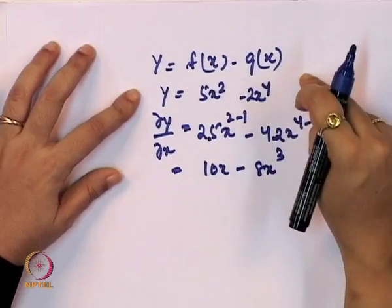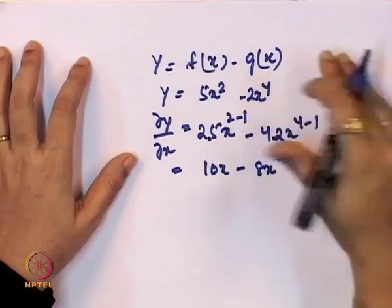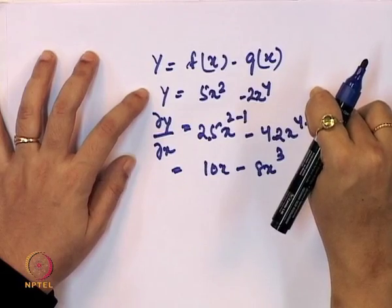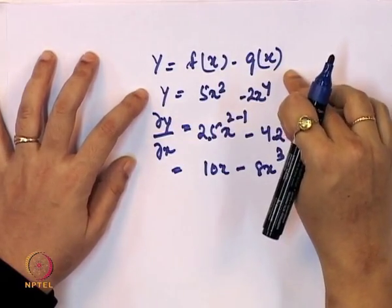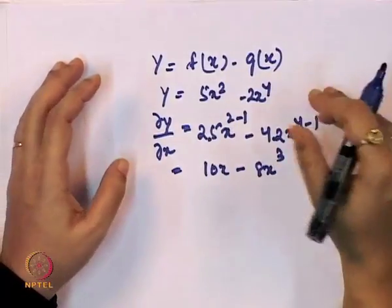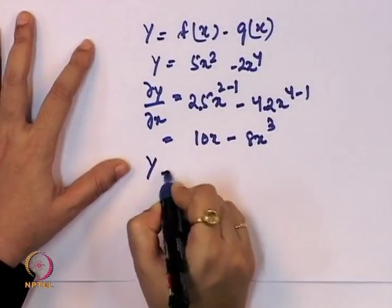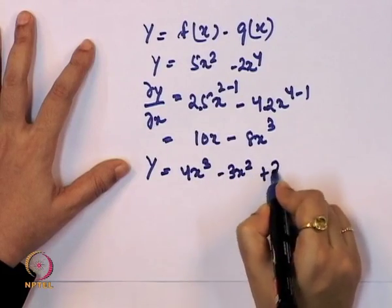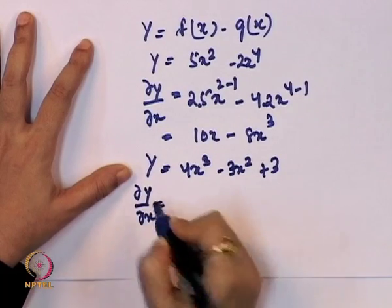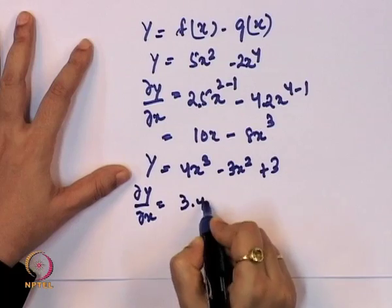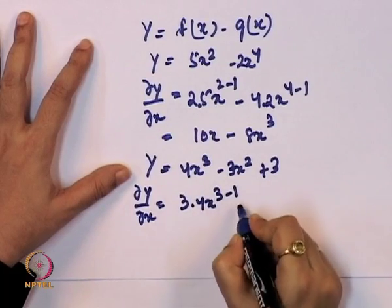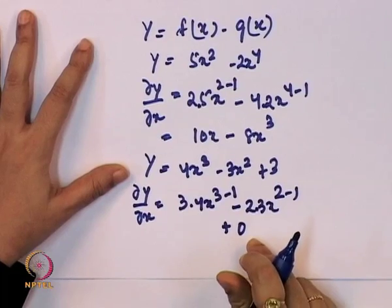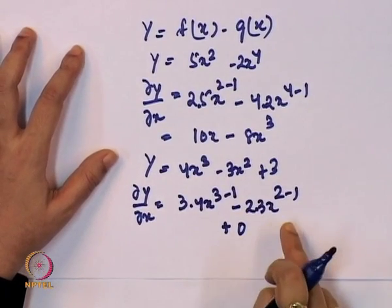So, when y is dependent on a function with addition or subtraction, we take the partial derivative with respect to both variables. Let us also add a constant: y = 4x³ - 3x² + 3. Then dy/dx = 3·4·x^(3-1) - 2·3·x^(2-1) + 0 = 12x² - 6x. The first order derivative of a constant is always 0.